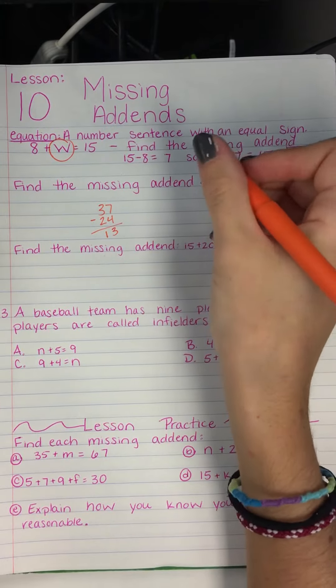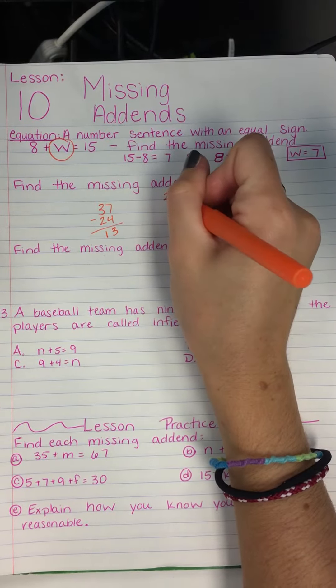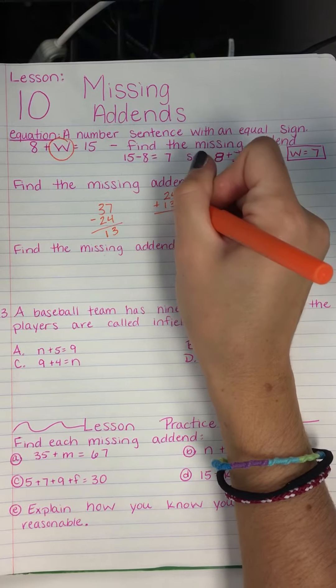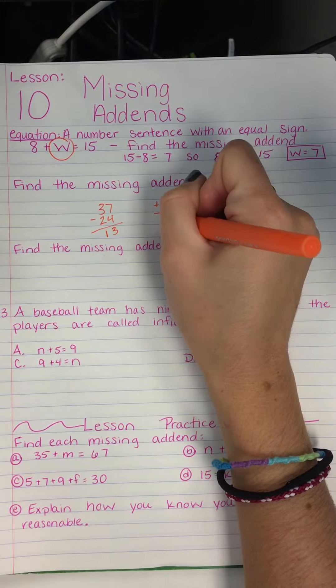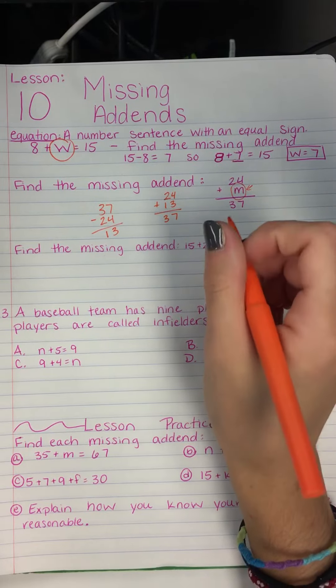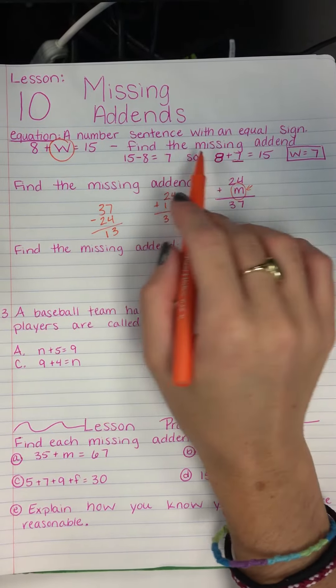So 7 take away 4 is 3, and 3 take away 2 is 1. So our answer is 13, but we're going to fact check that, of course, and do 24 plus 13, 4, 5, 6, 7, 37, which is exactly what we should have gotten. It is always, always, always, always important to double check your work.